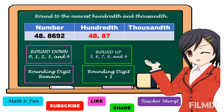Next, we're going to round this number to the nearest thousandths. We're going to find the thousandths digit — this is tens, hundreds, thousands. Nine is in the thousandths place, so nine is our rounding digit. We're going to look at the digit to the right of 9, which is 2.